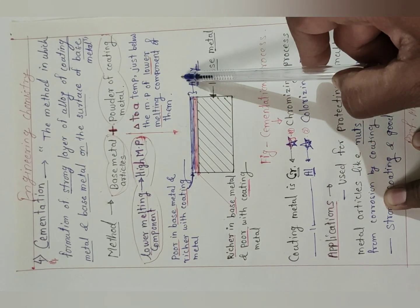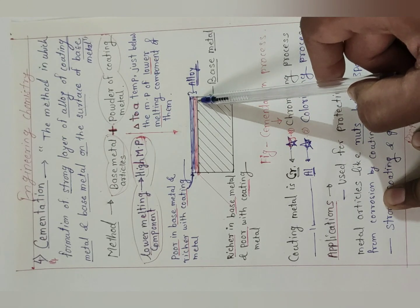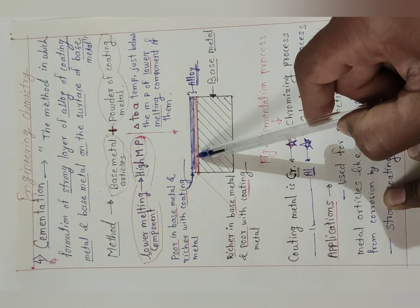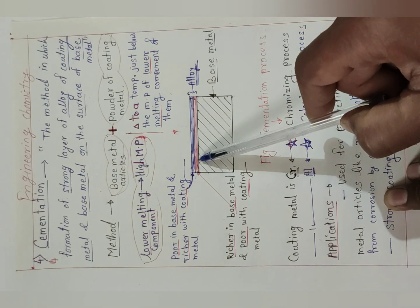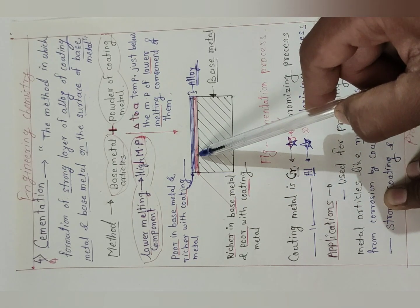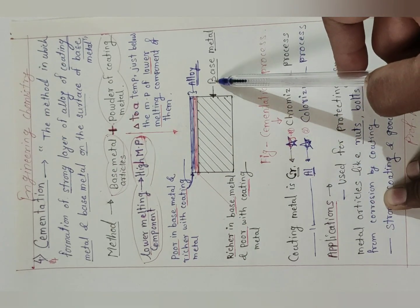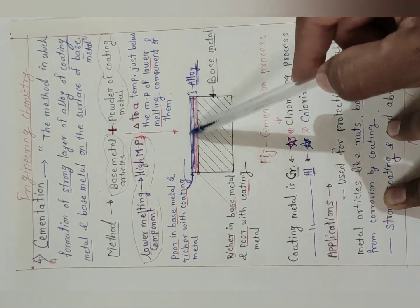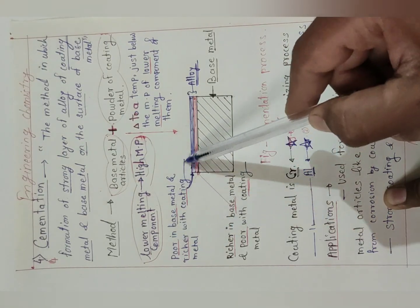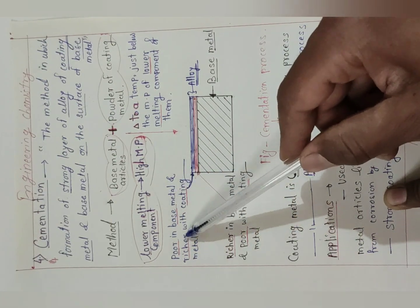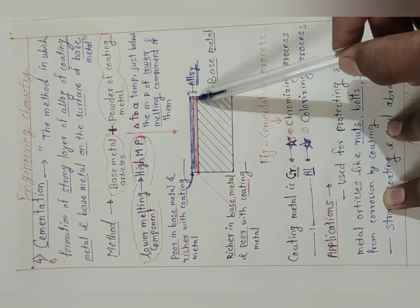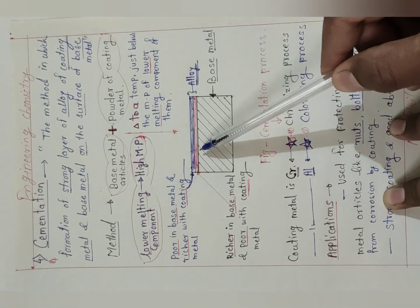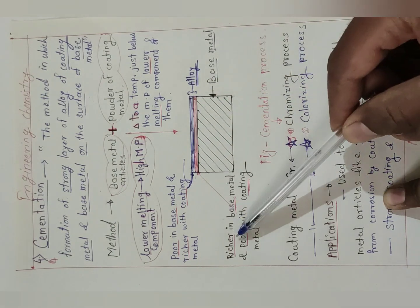The formed alloy has a different composition depending on the layer. The layer close to the base metal is richer in base metal and poor in coating metal, because it is adjacent to the base metal. The upper layer — away from the base metal — is poor in base metal and richer in coating metal. In this way, the alloy is formed at the surface of the base metal with varying composition.